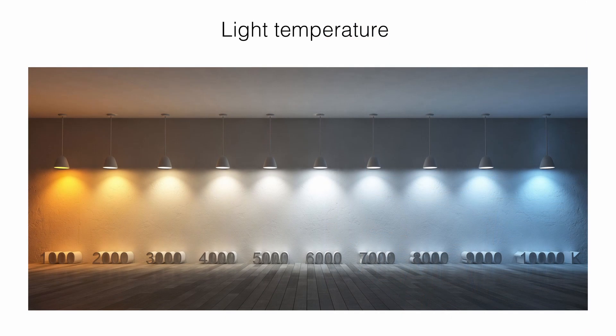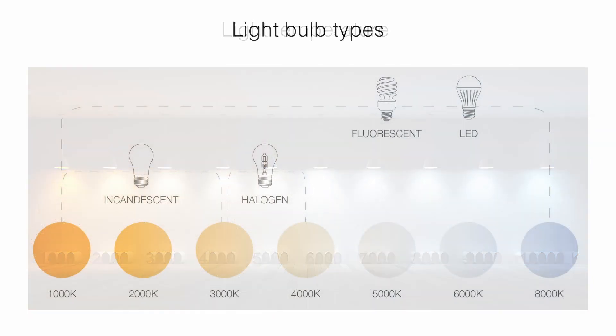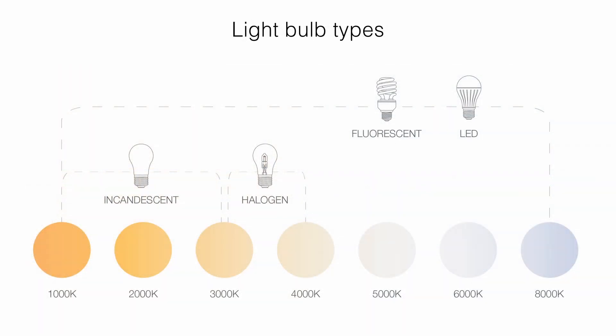Light temperature: light bulb temperatures are measured in Kelvin, and most homes feature light bulbs in the 2000 to 6500 range. While the scale spans from 1 to 10,000, neutral tones are around the 4000 mark. As you can see by the picture in front of you, temperatures below 4000 Kelvin shine warmer and temperatures above 4000 Kelvin glow cooler.